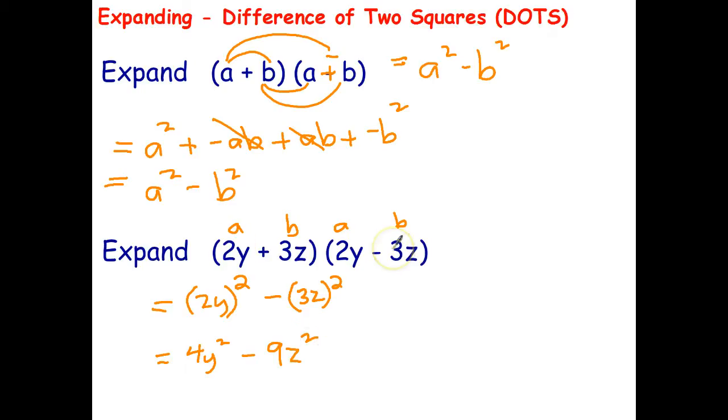So I can expand that with practice just in one step. I just say square that is 4y squared, square that is 9z squared, write the difference of two squares. Now you could do this the long way, the way we learned before. You'll get exactly the same answer. But what we want you to practice here is do these questions using the difference of two squares.